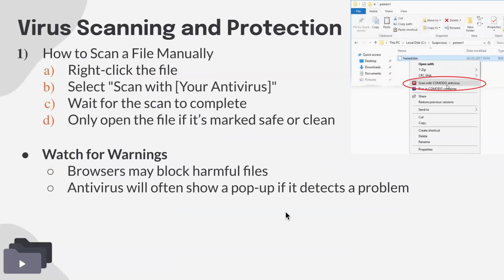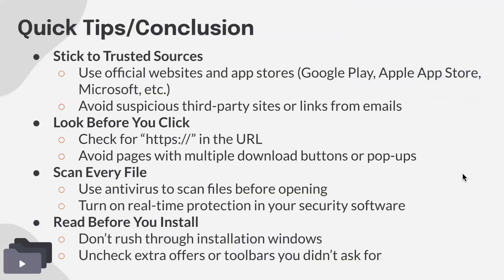If you need to scan a file manually — say someone emailed you something or you downloaded something — if you have a virus scanner you can usually right-click on the file and scan it for viruses. Your antivirus name will appear in that menu. Always watch for warnings: your browser has built-in protections and will block harmful files or show a pop-up saying it's unsafe. Heed those warnings and don't continue against the advice of your antivirus software.